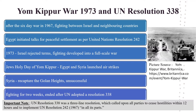After the Six-Day War in 1967, there were years of intermittent fighting between Israel and neighbouring countries. Egypt initiated talks for peaceful settlement in accordance with UN Resolution 242. Israel rejected those terms and the fighting developed into a full-scale war in 1973. On the Jews' holy day of Yom Kippur, Egypt and Syria launched airstrikes against Israel. Syria wanted to recapture the Golan Heights but was unsuccessful. The fighting lasted for two weeks and ended after the UN adopted a resolution to stop the war. UN Resolution 338 called upon all parties to cease hostilities within 12 hours and to implement UN Resolution 242 passed in 1967 in all its parts.